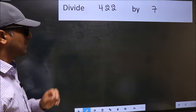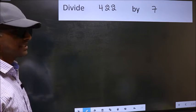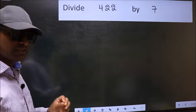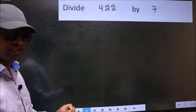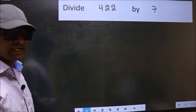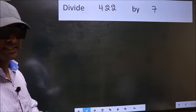Divide 422 by 7. While doing this division, many do this mistake. What is the mistake that they do? I will let you know. But before that, we should frame it in this way.